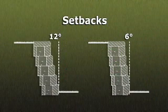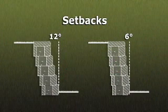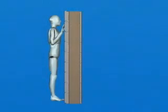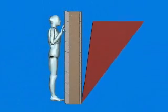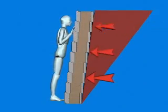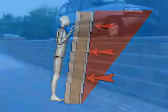The amount your wall leans back into the hill is called setback. Allen blocks come in 6 and 12 degree setbacks. 12 degree setbacks provide better leverage and require less reinforcement to hold back the pressure behind the wall.